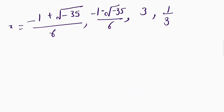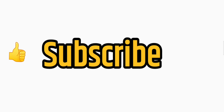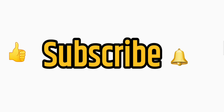So the four values of the given equation are: (negative 1 plus square root of negative 35) divided by 6, (negative 1 minus square root of 35) divided by 6, 3, and 1 by 3. If you like the video please give a thumbs up, subscribe to my channel for more interesting videos, and hit the bell icon for further notifications. Thank you.